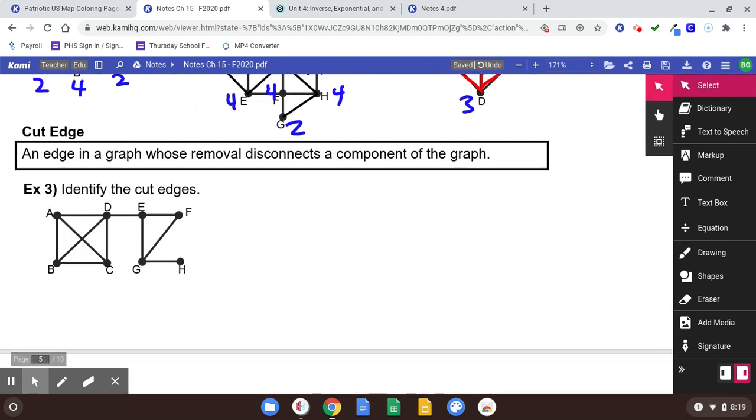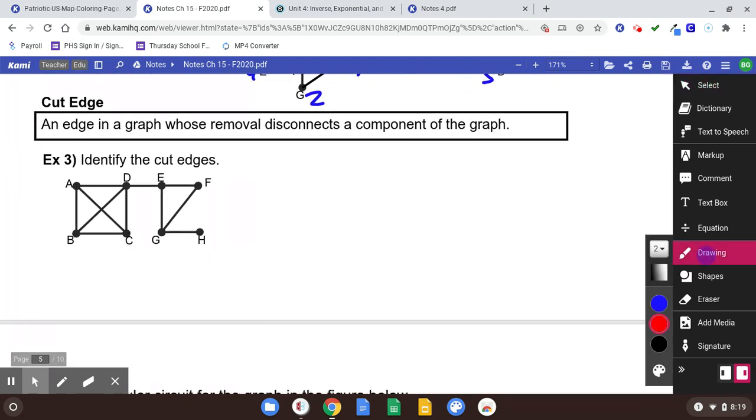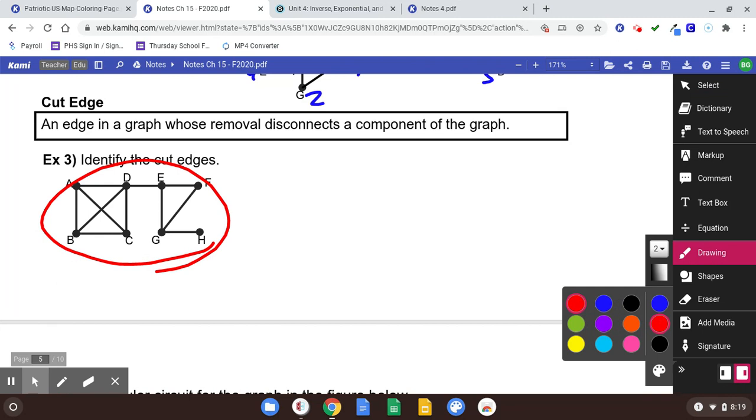And then there's a cut edge. A cut edge is an edge in a graph whose removal disconnects a component of the graph. A lot of words there. You might want to read that again. A component is like how many pieces are there. Right now, this is all one piece. It's all connected, meaning you can get to any dot from any dot.